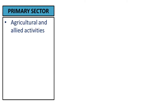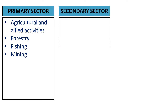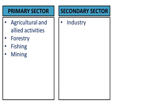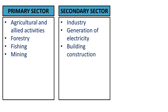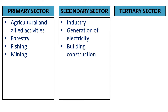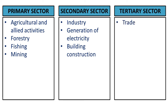The primary sector includes agriculture and allied activities (Krishiyum Anubandha Pravartanengalu), forestry (Vanapariparanam), fishing, and mining (Gananam). The secondary sector includes industry (Vevasayam), generation of electricity (Vaithadjulpavanam), and building construction (Ketadadaram).